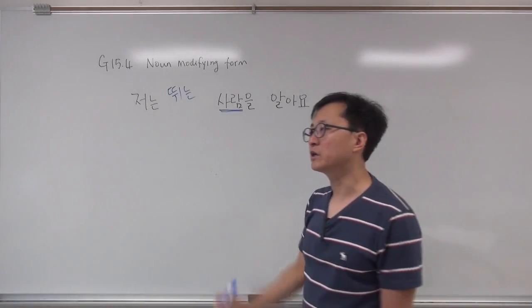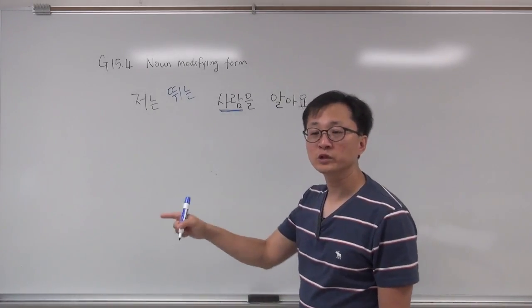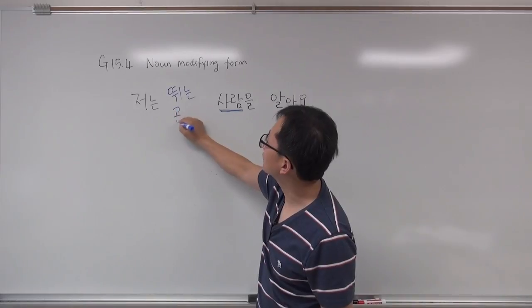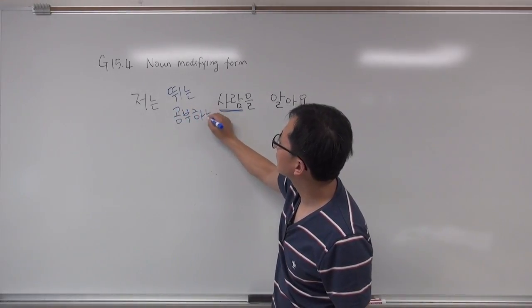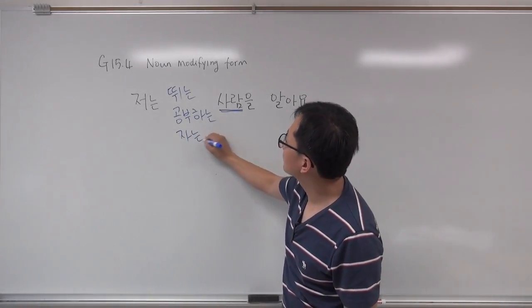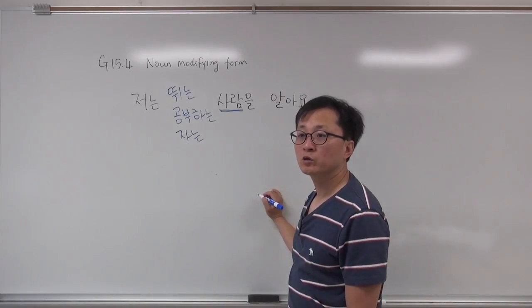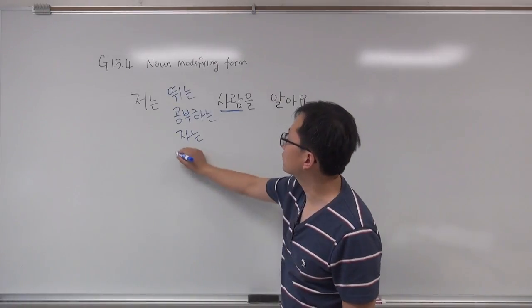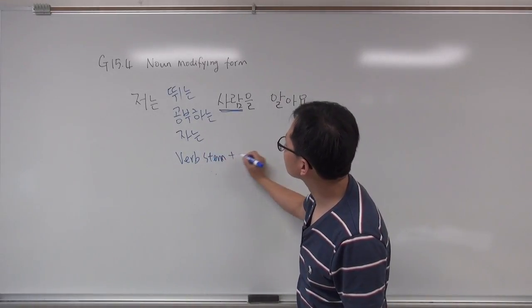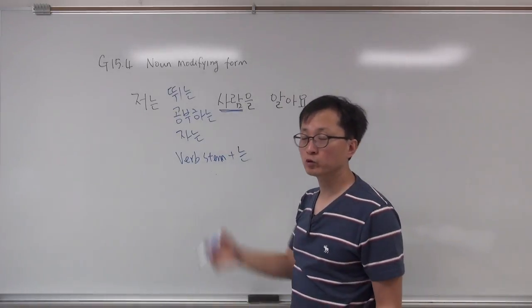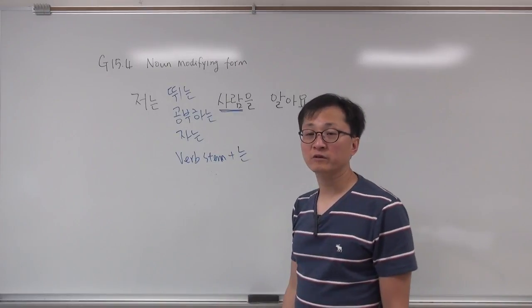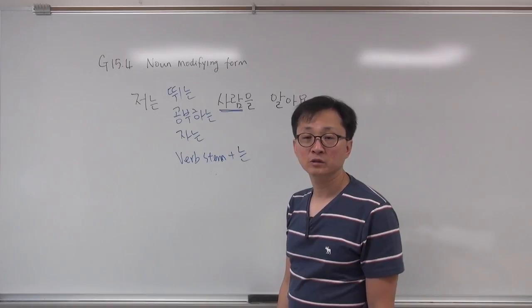In the video, somebody is studying, so you want to say I know this person who is studying — 공부하는 사람을 알아요. Somebody is sleeping in the video — I know this sleeping person: 자는 사람을 알아요. So verb present tense is simple: verb stem plus 는. If you know the dictionary form, you take 다 out and add 는. This is the noun modifying form, present tense for verbs.